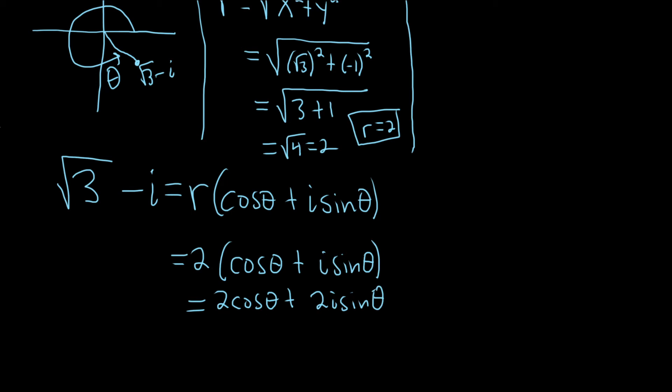To find theta, what we can do is use properties of complex numbers. Two complex numbers are equal when the real parts are equal. So this must be equal to this. So 2 cosine theta is equal to the square root of 3. And the imaginary parts are equal. So 2 sine theta is equal to negative 1.